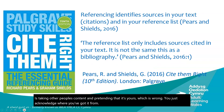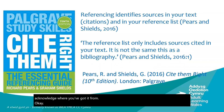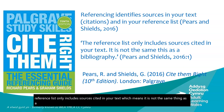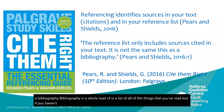Referencing identifies sources in the text — those are the citations — and in the reference list. The reference list only includes sources cited in your text. This means it is not the same as a bibliography. A bibliography is a list of everything you've read, but if you haven't used something in that assignment, you don't include it in the reference list.